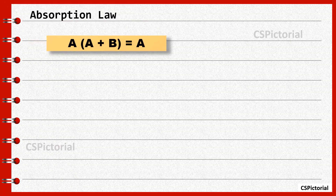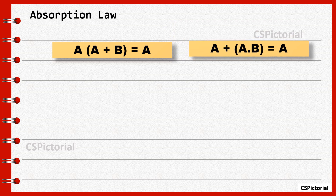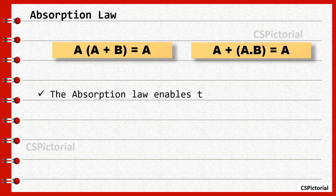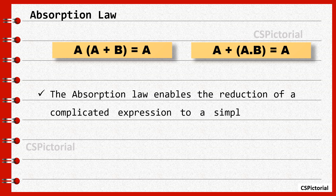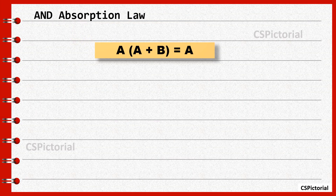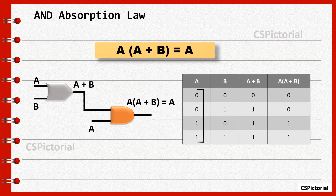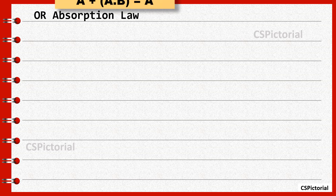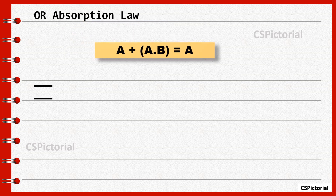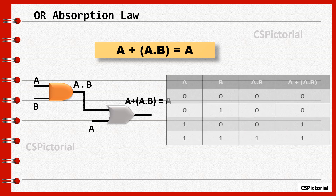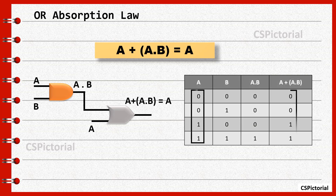Absorption law. A times A plus B equals A, and A plus A dot B equals A. The absorption law enables the reduction of a complicated Boolean expression by absorbing like terms. AND absorption law: the input variables A and B are ORed and then ANDed with input A; the output A times A plus B can simply be replaced as A with the absorption law. It can also be proved with the truth table. OR absorption law: the input variables A and B are first ANDed and then ORed with A; this complex operation A plus A dot B can simply be replaced as A.